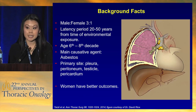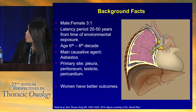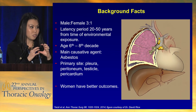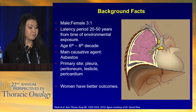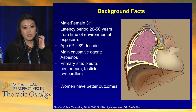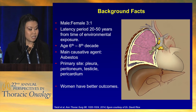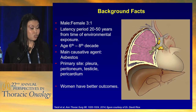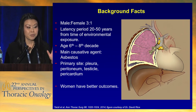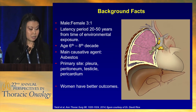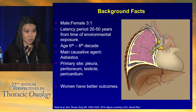Mesothelioma is a very challenging disease. The tumor is like the orange peel around the orange, and as you can imagine it's very difficult to achieve an R0 resection, if not impossible, though we do have different surgical techniques that can try. Usually we have a large latency period from asbestos exposure of 20 to 50 years, making it difficult to predict when a patient might develop mesothelioma. Women generally have better outcomes. We're focusing today only on pleural mesothelioma, though there are peritoneal, testicular, and pericardial forms.